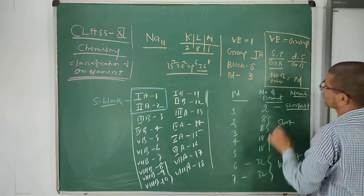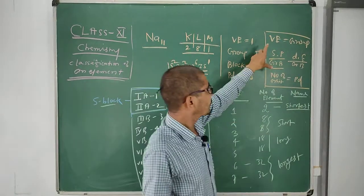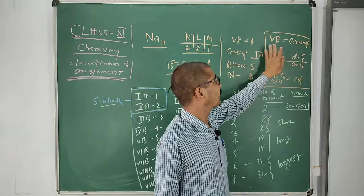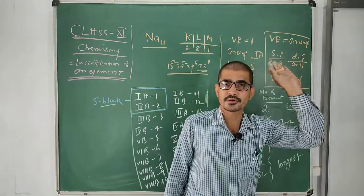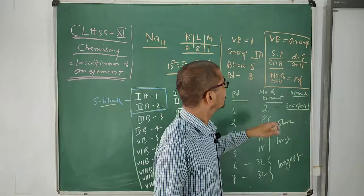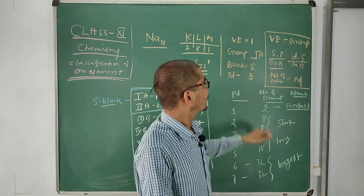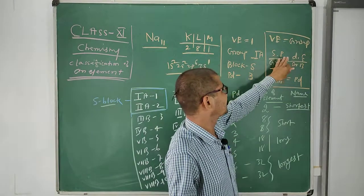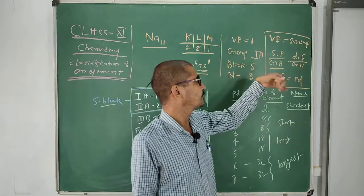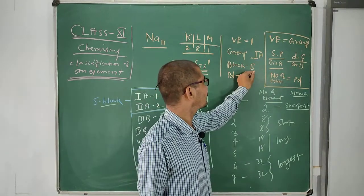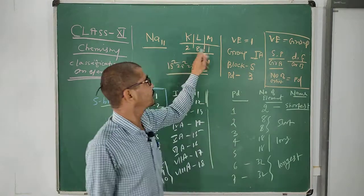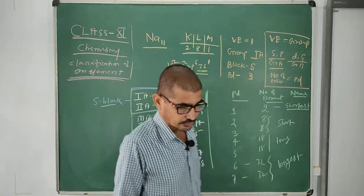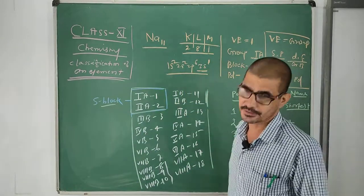These are very important points. With the help of this method, we are able to find the position of an element in the periodic table. First, write down the electronic configuration and identify the valence electron. Valence electron equals the group number. If valence electron is 1, group is 1; if 2, group is 2, and so on. So valence electron is 1, therefore group is first. Block: the last electron enters the S orbital, so block is S. Rule: if block is either S or P, they belong to subgroup A; if D or F, subgroup B. Since block is S, it belongs to subgroup A. Number of orbits is 3, which is the period. So we can say sodium is placed in group first, block S, and period 3 in the modern periodic table.